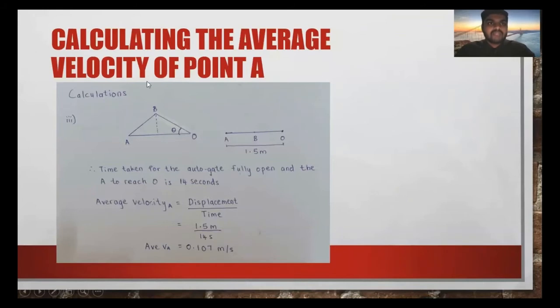Here we have to find the average velocity of point A. From the video, I know that A to O is 14 seconds and the distance from A to O is 1.5 meters. So we have the displacement and time, we can find the average velocity which is 0.107 meters per second.